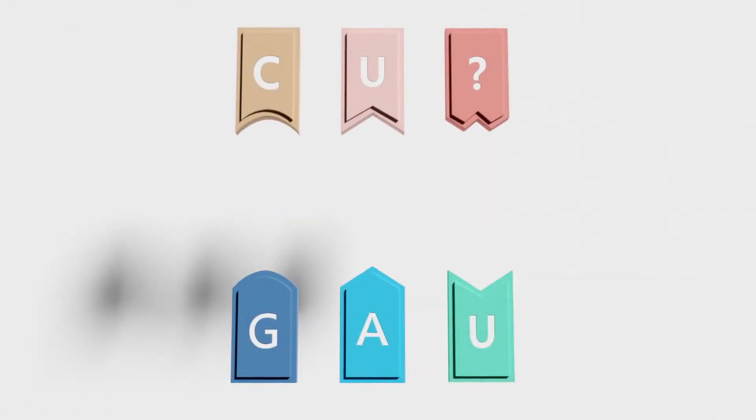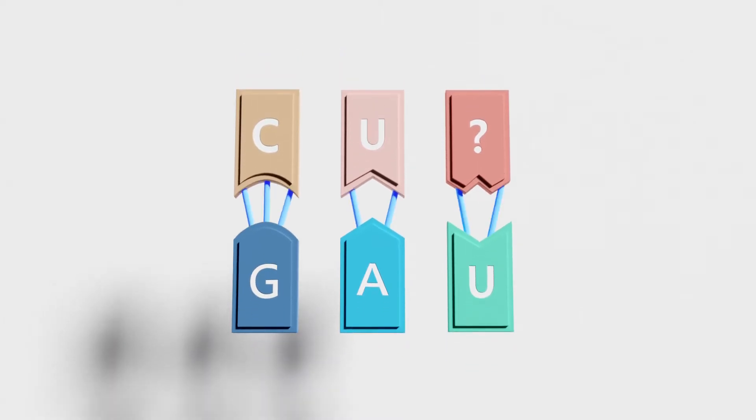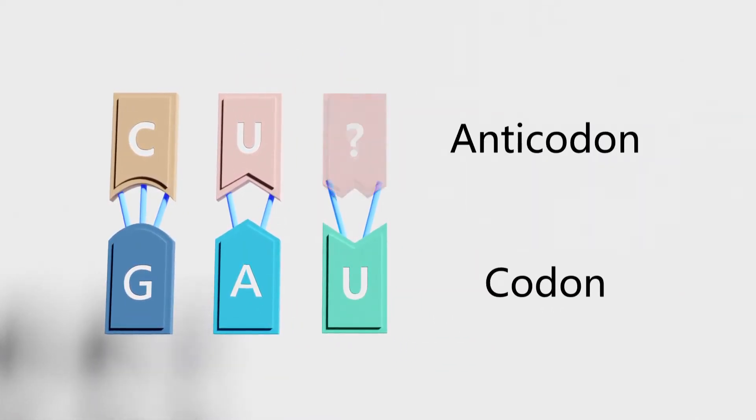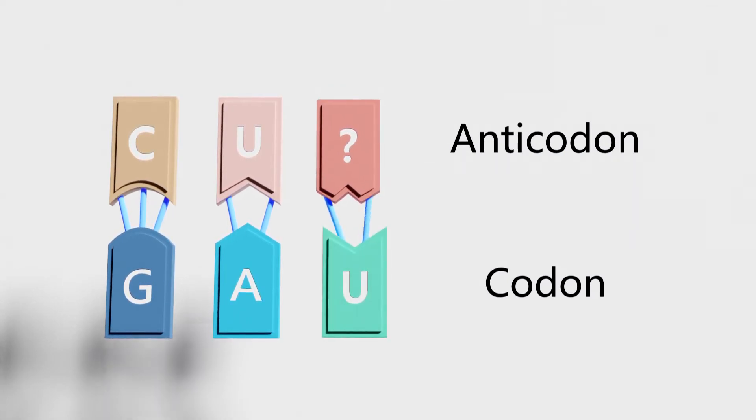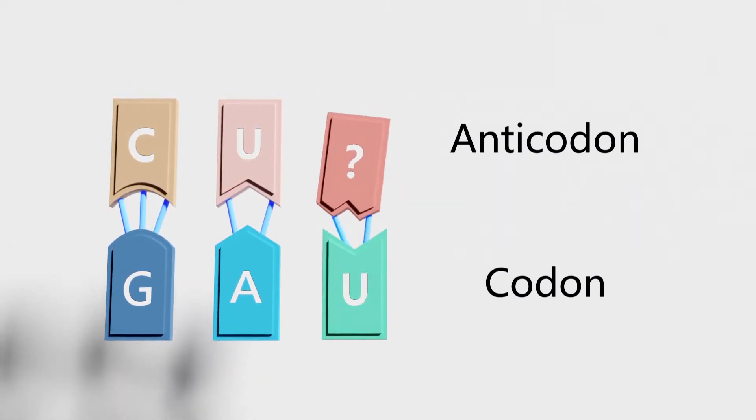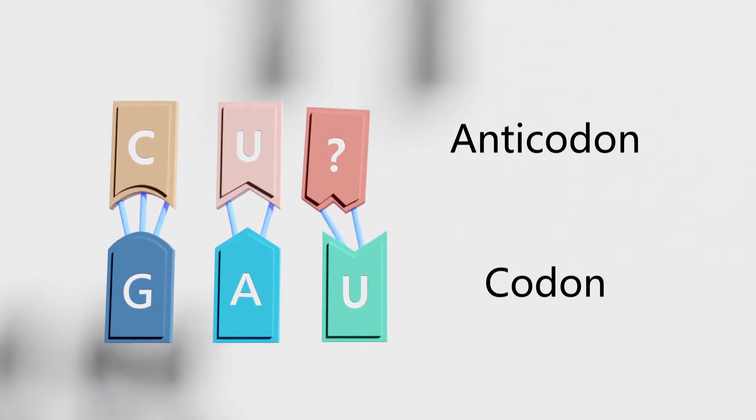In his manuscript, Codon-Anticodon Pairing: The Wobble Hypothesis, Crick suggested that the first tRNA anticodon base, which interacts with the third codon base, wobbled in 3D space, allowing it to form unconventional pairs alongside those permitted by Watson and Crick pairing.